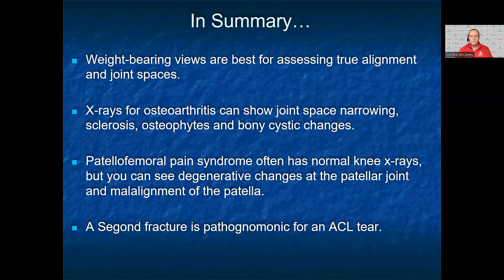In summary, always remember to get weight-bearing views when possible, as that is the best way to evaluate alignment and joint space narrowing. X-rays in patients with osteoarthritis often will show joint space narrowing, sclerosis, osteophytes, and sometimes cystic changes of the bone. Patellofemoral pain syndrome often has normal knee x-rays, but you can see degenerative changes at the patellofemoral joint and patellar malalignment. A Segond fracture is pathognomonic for an ACL tear. Thank you very much.